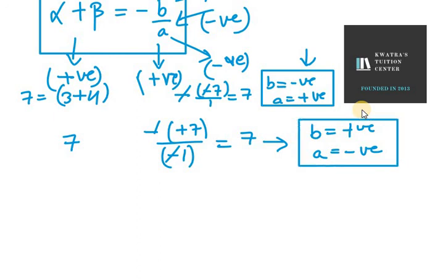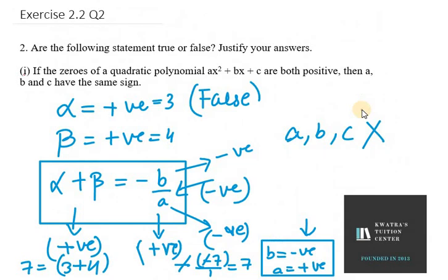If we need alpha plus beta as positive, you can see that B and A must be of opposite sign. They can't have same sign. So that's your answer for question number 1. That is false. Thank you for watching this video.